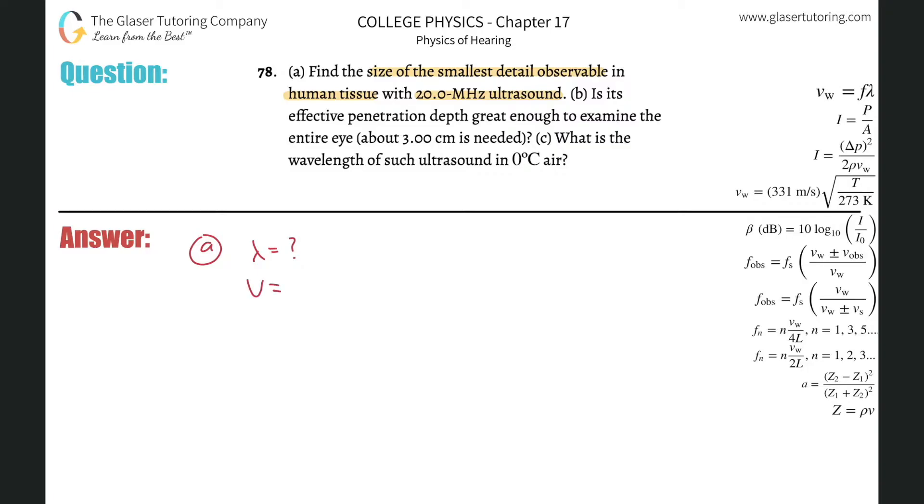We have to know the velocity of ultrasound through human tissue. On average you could do about 1500, 1540, something like that. I think the book might use 1540 meters per second. And they tell us the frequency is about 20 megahertz, but megahertz is times 10 to the sixth, so it's really 20 times 10 to the sixth hertz.